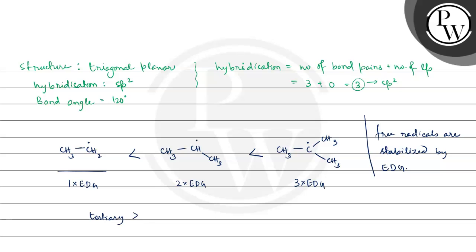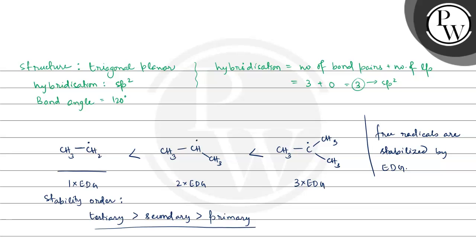The stability order is: tertiary greater than secondary greater than primary. This is the stability order of free radicals. This is the required answer and I hope you understood the concept well. Best of luck!